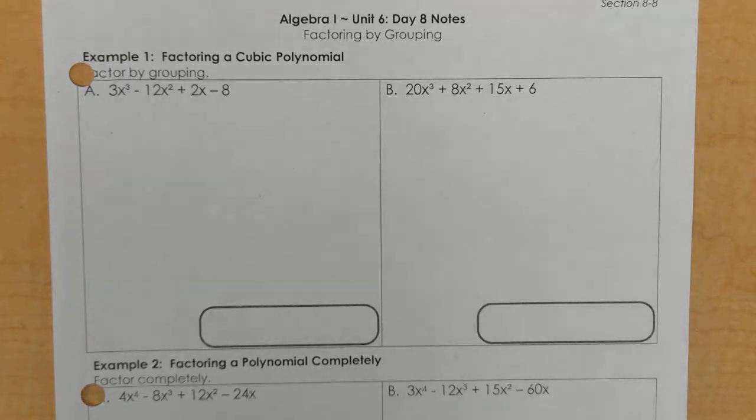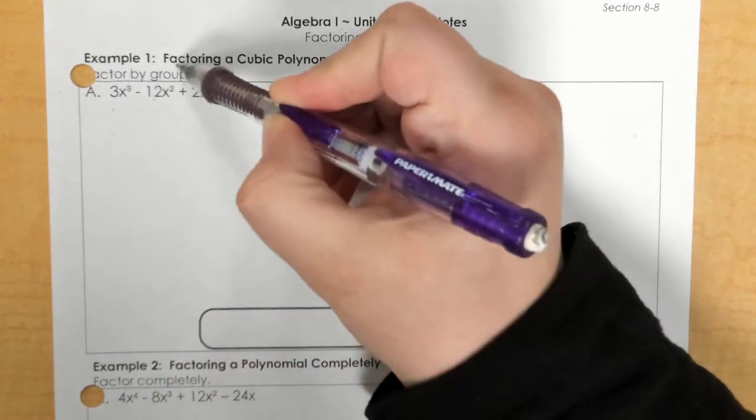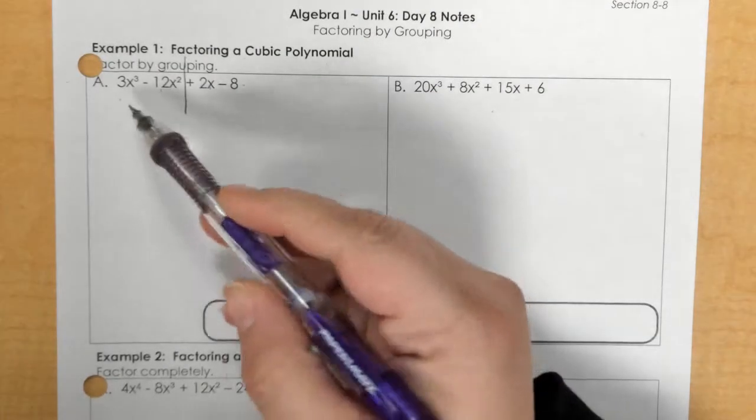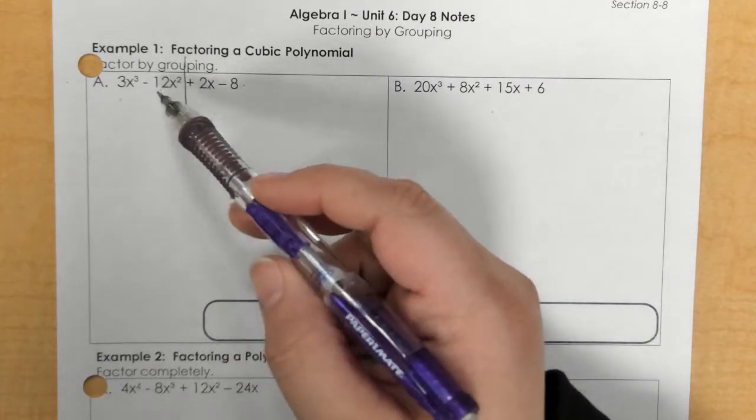So, this is called factor by grouping, and what you do is you see that there are four terms. You cut this in half, and on the first side, you figure out what's the GCF of those two terms.